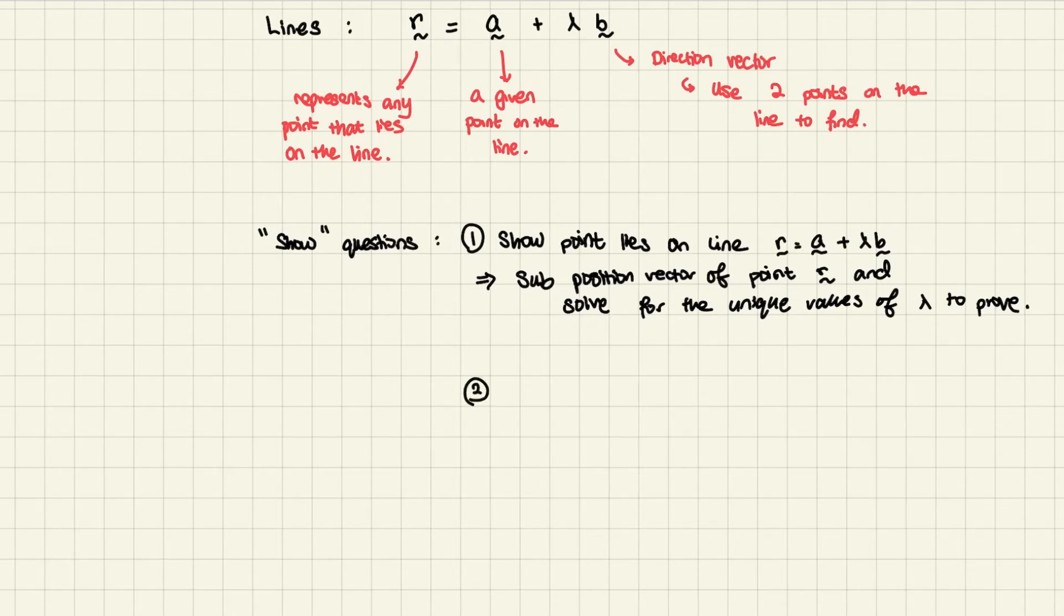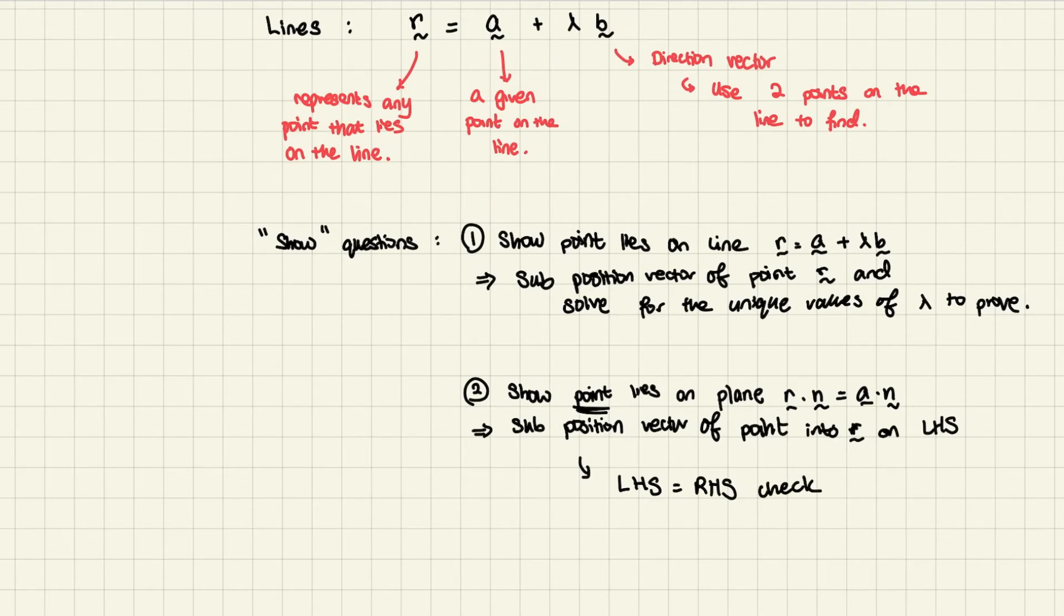The next one would be to show that a point lies on a plane. I know we've not covered planes yet, but let's just write all the show questions over here since we're already at it. Let's say r dot n equals a dot n. So how would you go about doing this? Actually, it's not very hard as well. You just need to sub the position vector of the point, whatever this point over here is, into r on the left-hand side. LHS is left-hand side. And very simple, after this, it's just your left-hand, right-hand rule. You just need to check that left-hand side equals to RH side. Just make sure that your left-hand side is equivalent to the value of your right-hand side. Usually a dot n over here would usually be what we call a determinant, so there will usually be a fixed value. You just need to prove that both values tally up. If they tally up, you can prove whatever this point is that it lies on the plane.